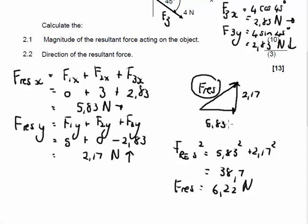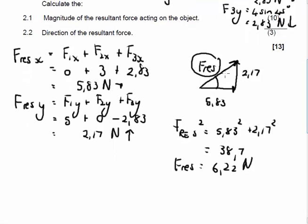And forces are vectors, which means we need direction and magnitude. So I'm going to use tan theta. Tan theta is going to be opposite, 2.17 over adjacent, 5.83. So if you take your calculator and you divide 2.17 by 5.83, you should get an answer of 0.3722. Then take your calculator, shift, tan answer, and your angle is going to be 20.42 degrees.